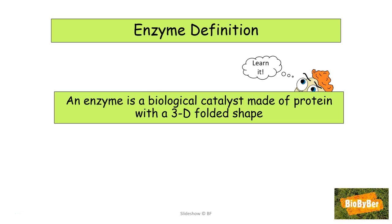An enzyme is a biological catalyst made of protein with a 3D folded shape. This has to be learned off by heart, word perfect, exactly as it is. The exams are very fond of asking the definition of an enzyme and it is one of the objectives of this section. A catalyst speeds up the rate of a chemical reaction without being used up itself, so enzymes speed up chemical reactions. They are biological because they are found in cells, they are made of protein.